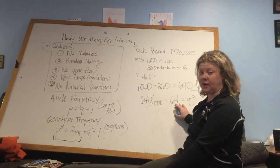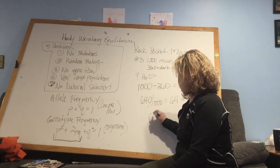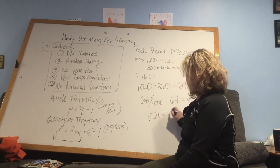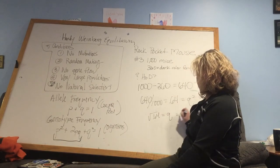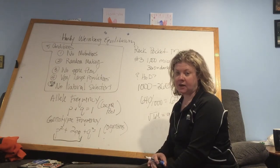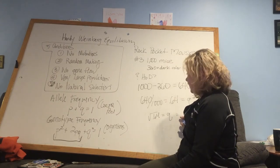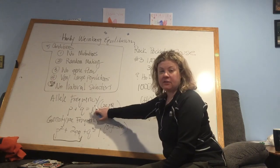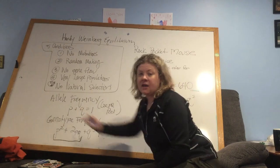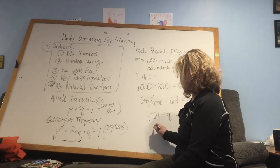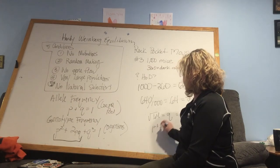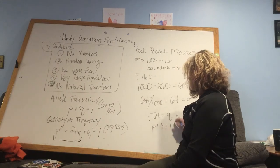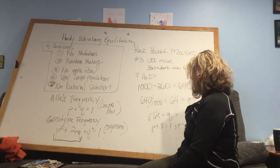Once I have Q squared, then I can take the square root of it to get Q, which in this case is going to be 0.8. Now that I have 0.8 equaling Q, I can go back to this allele frequency and very easily see that P is going to be 0.2. So P plus 0.8 equals 1. So P equals 0.2.